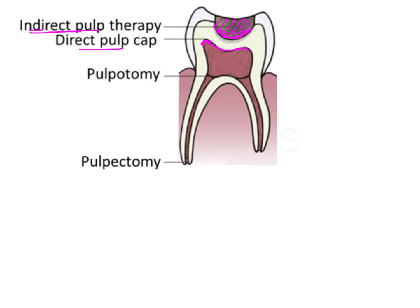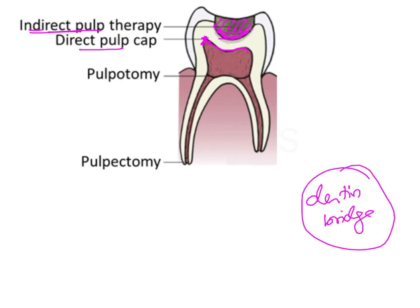In direct pulp capping, sometimes a pinprick exposure can occur, usually seen when there is deep dentinal caries. Instead of removing the pulp, a medicament is placed over the exposed pulp, which causes the formation of new dentine over the exposed area — known as a dentine bridge — and allows healing to take place. If during caries removal there was a small pinprick exposure where bleeding could be easily stopped, this tells us there is no inflammation of the pulp, and we can do direct pulp capping by placing a medicament and sealing it to maintain the vitality of the pulp.